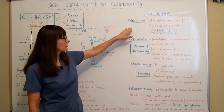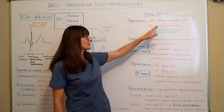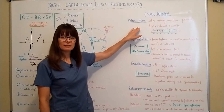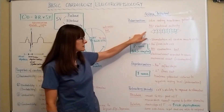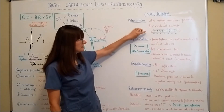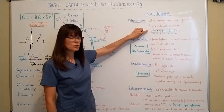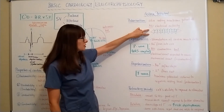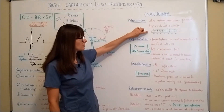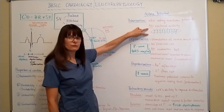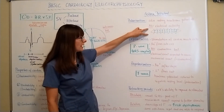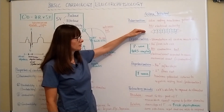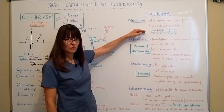Starting with polarization, also known as the resting membrane potential — there is no electrical activity at all. Inside the cardiac muscle cell we have positive charge, and outside there is a negative charge. The positive charge remains within the cell, the negative remains outside, and no electrical activity is taking place.